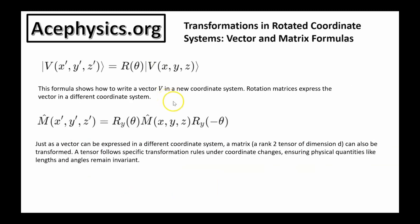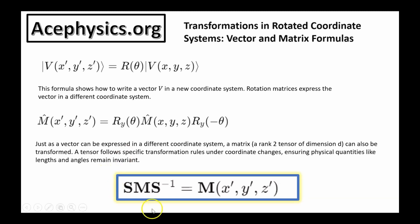To recap: rotation matrices express the vector in a different coordinate system. Just as a vector can be expressed in a different coordinate system, a matrix — also known as a rank 2 tensor — can also be transformed. A tensor follows specific transformation rules under coordinate changes, ensuring physical quantities like lengths and angles remain invariant. This is the transformation known as a similarity transformation — how you transform a rank 2 tensor or matrix operator between coordinate systems.